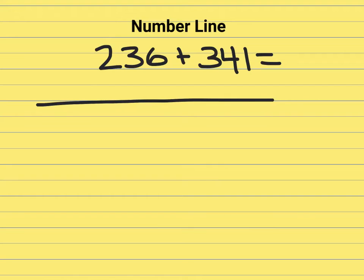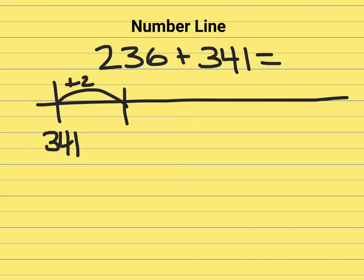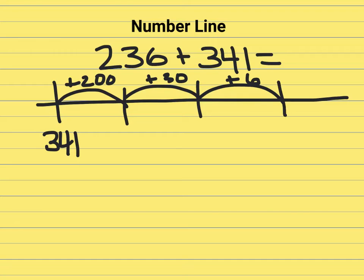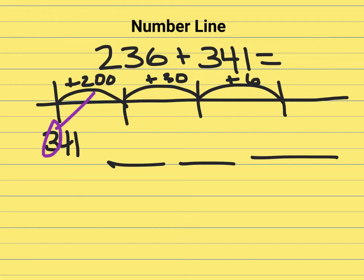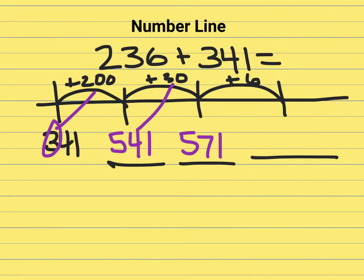I'll solve this problem by using an open number line. I'll begin at 341. I'll jump 200, then I'll jump 30, and then I will jump 6 ones to get my final answer. Each time I make my jumps, I will log where I land. So 341 plus 200 is 541. 541 plus 30 is 571. And then 571 plus 6 is 577.